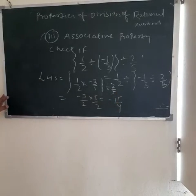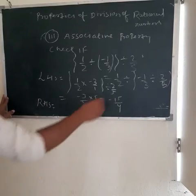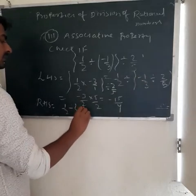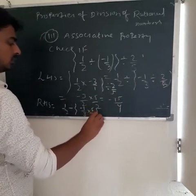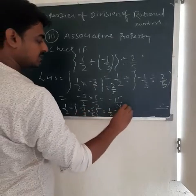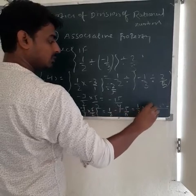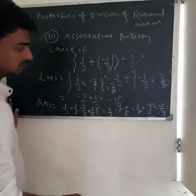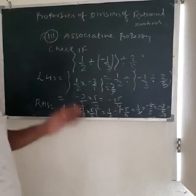This value will be minus 3 upon 2 multiplied by 5 upon 2, equal to minus 15 upon 4. Now for the RHS side: 1 upon 2 divided by (minus 1 upon 3 multiplied by 1 upon 2) divided by minus 5 upon 6, equals 1 upon 2 multiplied by minus 6 upon 5, equal to minus 3 upon 5. So LHS is not equal to RHS.